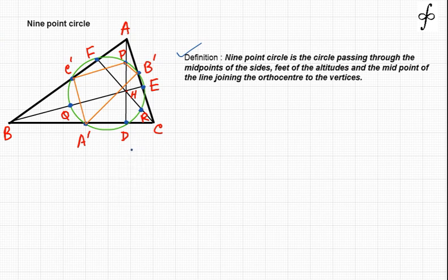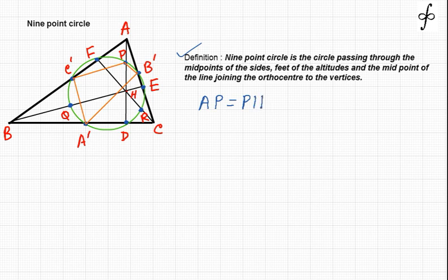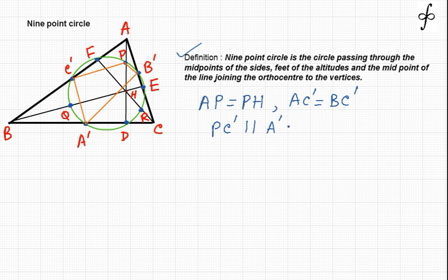Let's see why this circle has to pass through these nine points — what is the reason behind this. From the figure, P is the midpoint of AH, so AP must equal PH. Also, AC dash equals BC dash because C dash is the midpoint of AB. From here we can say that PC dash must be parallel to BH, that is BE.